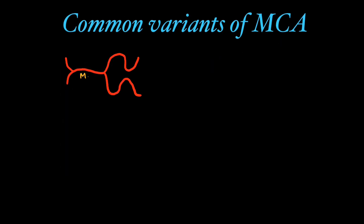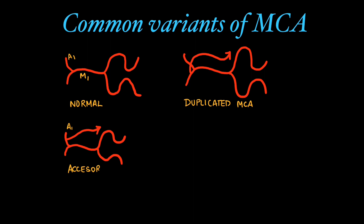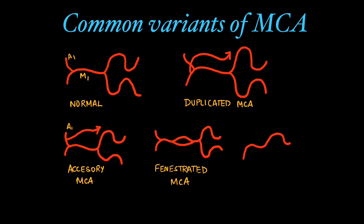Let's look at the common variants of the middle cerebral artery. The normal configuration is the baseline. There can be a duplicated middle cerebral artery arising from the internal carotid artery, an accessory middle cerebral artery which arises from the A1 segment of ACA, fenestration of the middle cerebral artery which is a rare entity, or early MCA branching which is very common.